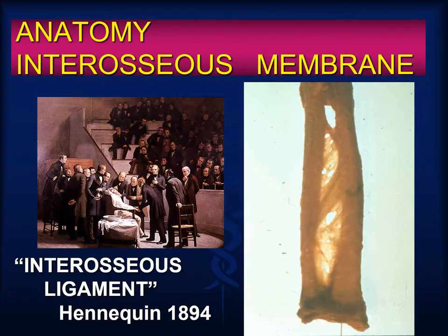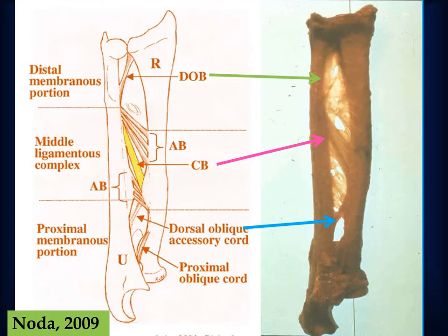The French anatomist Marie-François Hennigan was the first to define the interosseous membrane as a strong ligamentous complex that linked the radius and the ulna. Further research has refined the interosseous membrane into three portions with five distinct components. The middle ligamentous complex contains a central band and accessory bands. It is the central band which is the major load-bearing portion and plays a role in axial stability of the forearm.